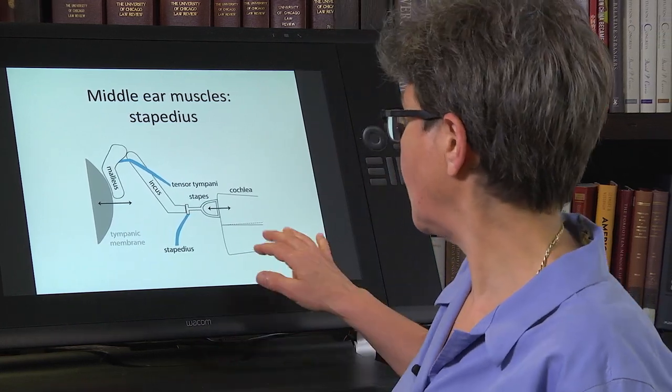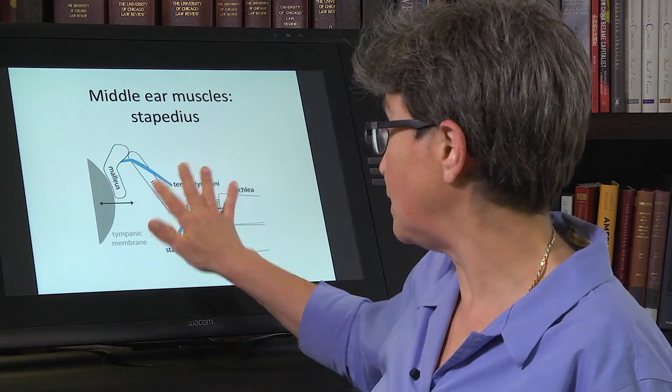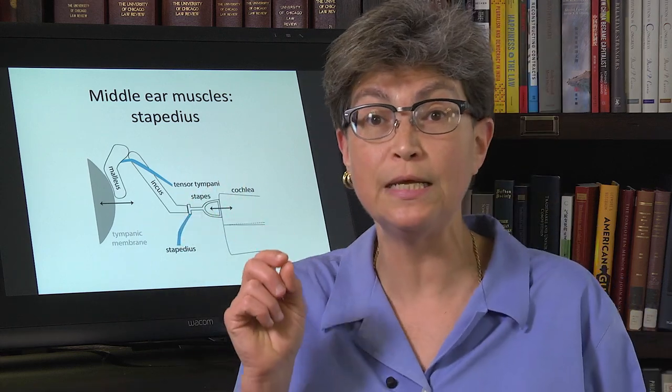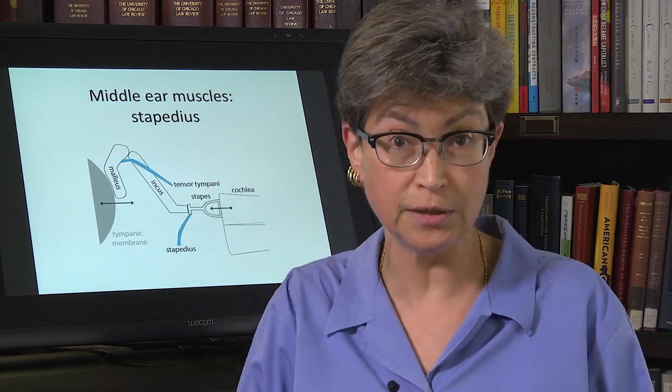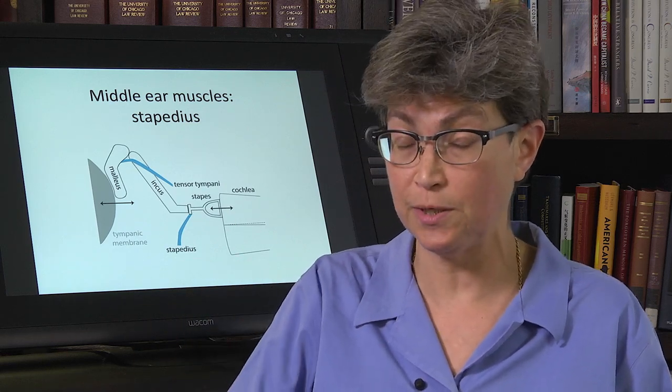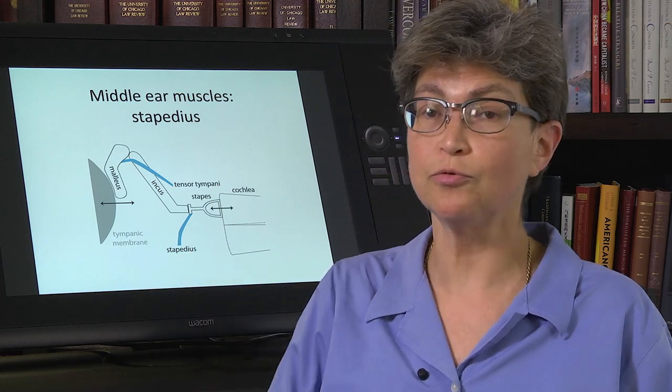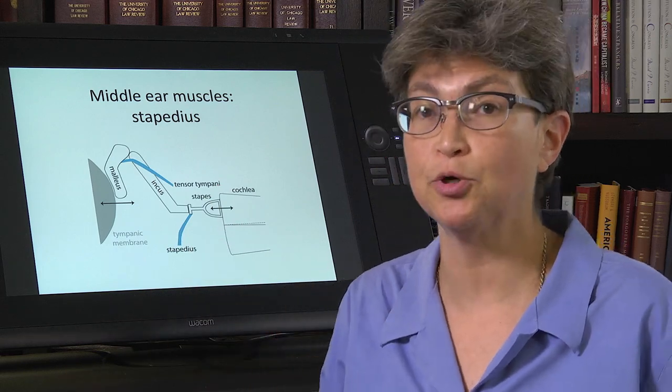This is a reflex, and it's a very interesting one. And this is the one that when the stapedius is not working, let's say because cranial nerve seven, which innervates the stapedius muscle, let's say that you have a Bell's palsy, the result of that will be hyperacusis.